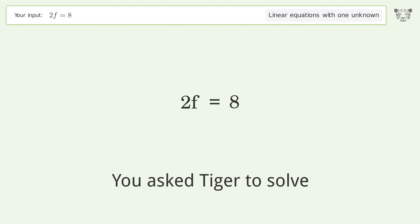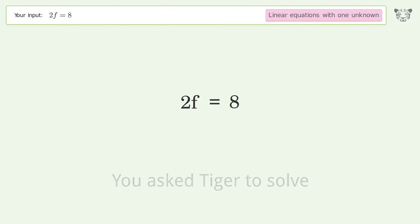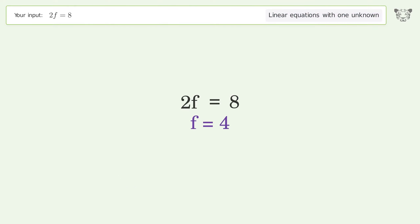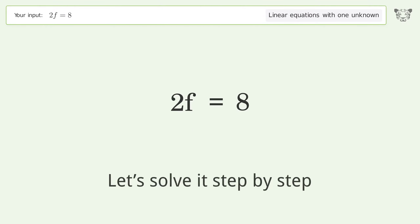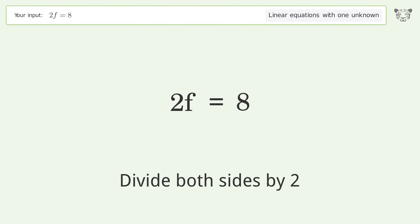Tiger Algebra solves 2f=8, a linear equation with one unknown. Let's solve it step by step: isolate f by dividing both sides by 2.